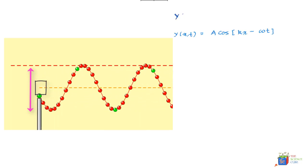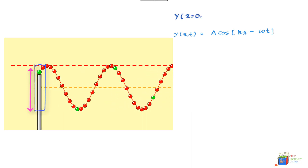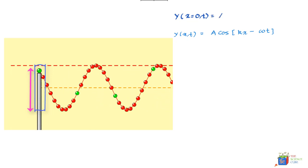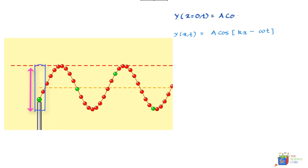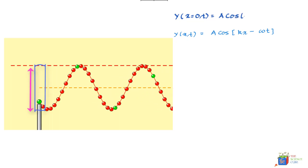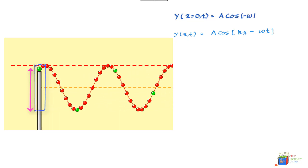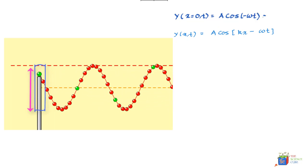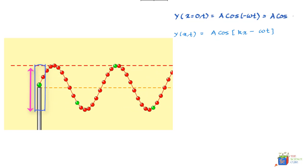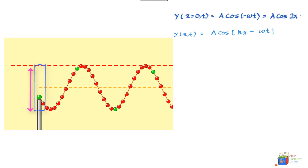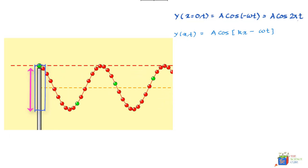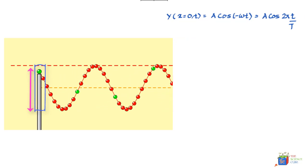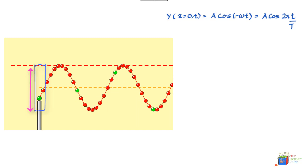In other words, we can find the y position of a particular point x on the string at various times. So let us try to find the position y of the point at x equal to say 0 at various times. So we are talking about this point here at x is equal to 0, and what will be its y position at various times as the wave moves.